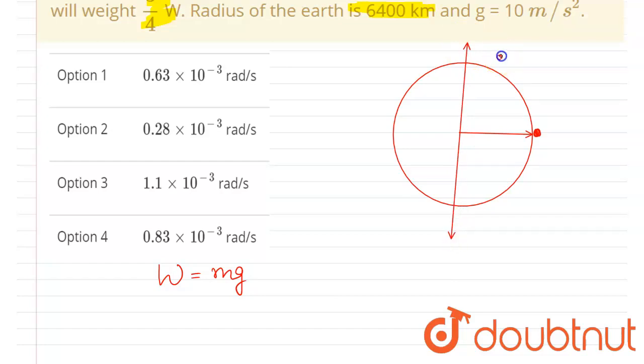If you see from the frame of the earth, a centrifugal force will act on the mass, and whose magnitude will be equal to m·ω²·R, where R is the radius of the earth.